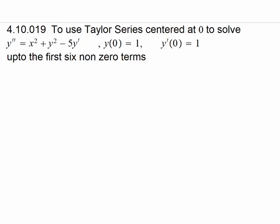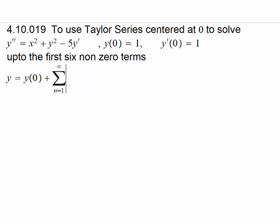In this example we have to use the Taylor series expansion of y to solve this differential equation. We are given a Taylor series expansion of y, and since it is centered at zero, you may recall it is also called the Maclaurin series. This is written as the sum from n equals 0 to infinity of the nth derivative of y at zero divided by n factorial times x to the power n.